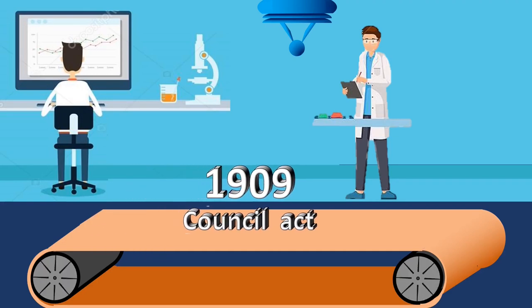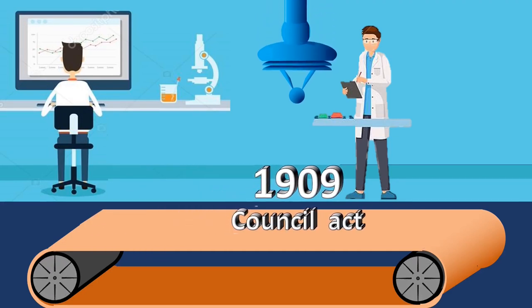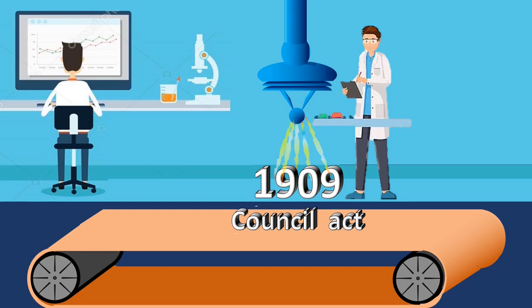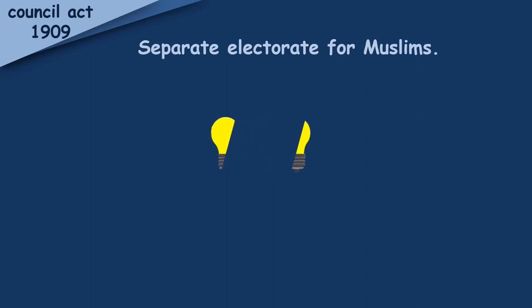As we have seen in the last video, the Council Act of 1909, also known as the Morley-Minto Act, was specifically designed to divide Indians on a communal basis. This act introduced the concept of separate electorate for Muslims, which resulted in the partition of India.